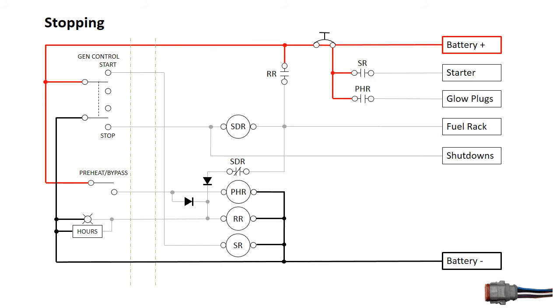As the engine comes to rest, the oil pressure drops and eventually triggers the oil pressure shutdown switch, connecting the shutdown circuit to battery negative, and we are back to the resting state that we started from.